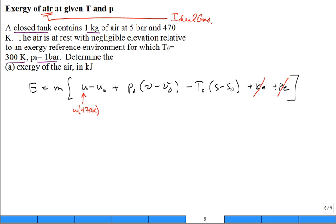And then U naught, it's the same table but evaluated at 300 Kelvin, and there's a line for 300 Kelvin.